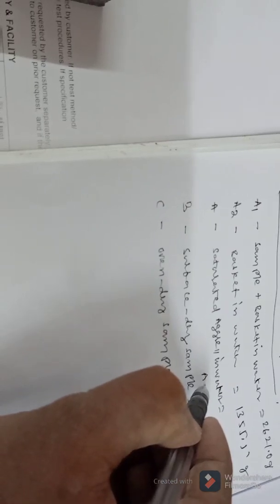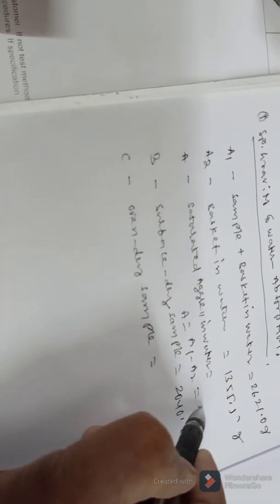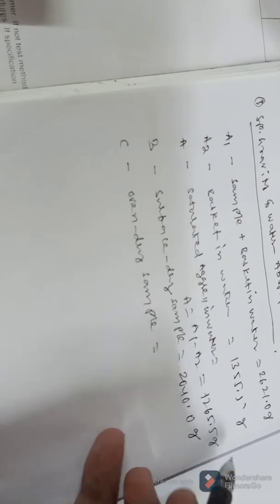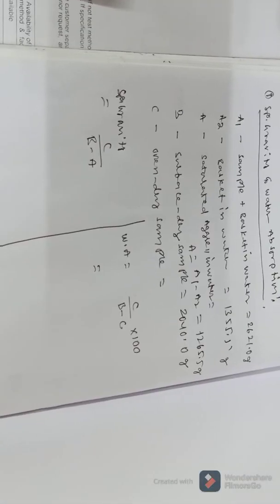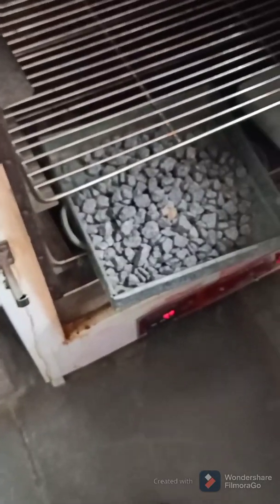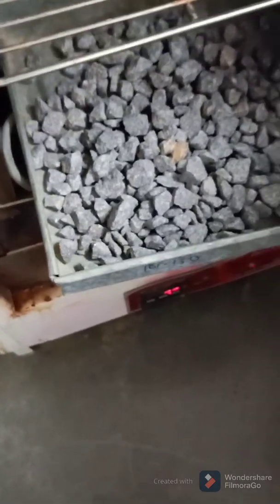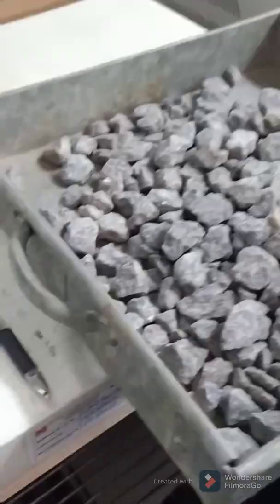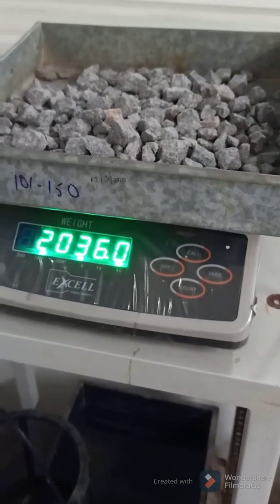A value is calculated as A1 minus C2, which is the saturated aggregate in water weight. B value is the surface dry sample weight. C value is the oven dry sample weight, dried up to 24 hours to constant weight. This is the oven dry weight.